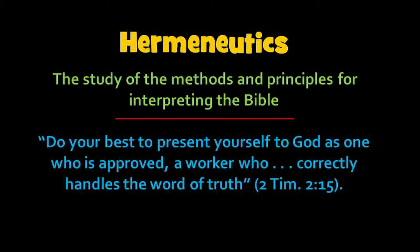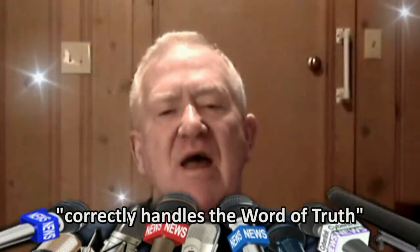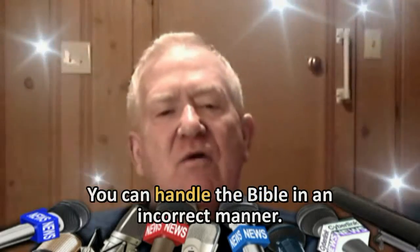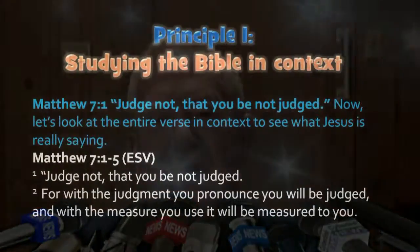Paul writes to Timothy, who's a young pastor, and tells him: "Do your best to present yourself to God as one who is approved, a worker who correctly handles the word of truth." That's found in 2 Timothy 2:15. For our purposes here today, we want to zero in on that phrase — "correctly handles the word of truth." If Paul had to exhort Timothy to correctly handle the word of truth, then that means you can mishandle the word of truth. You can handle the Bible in an incorrect manner, in which case you would not be approved by God.